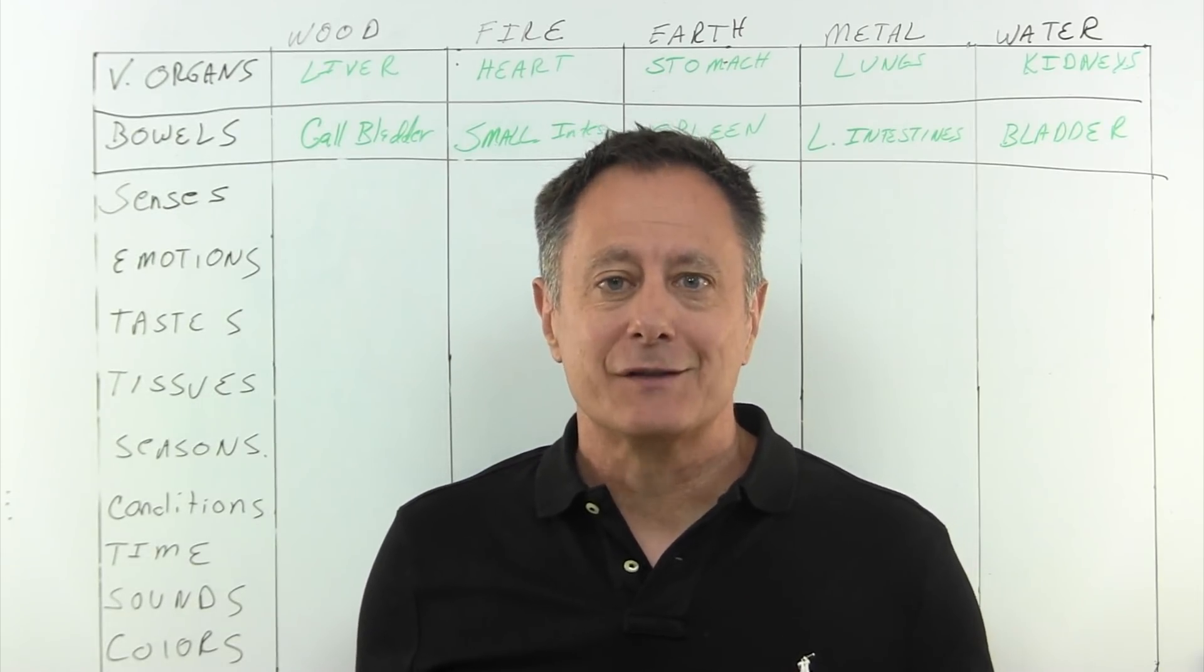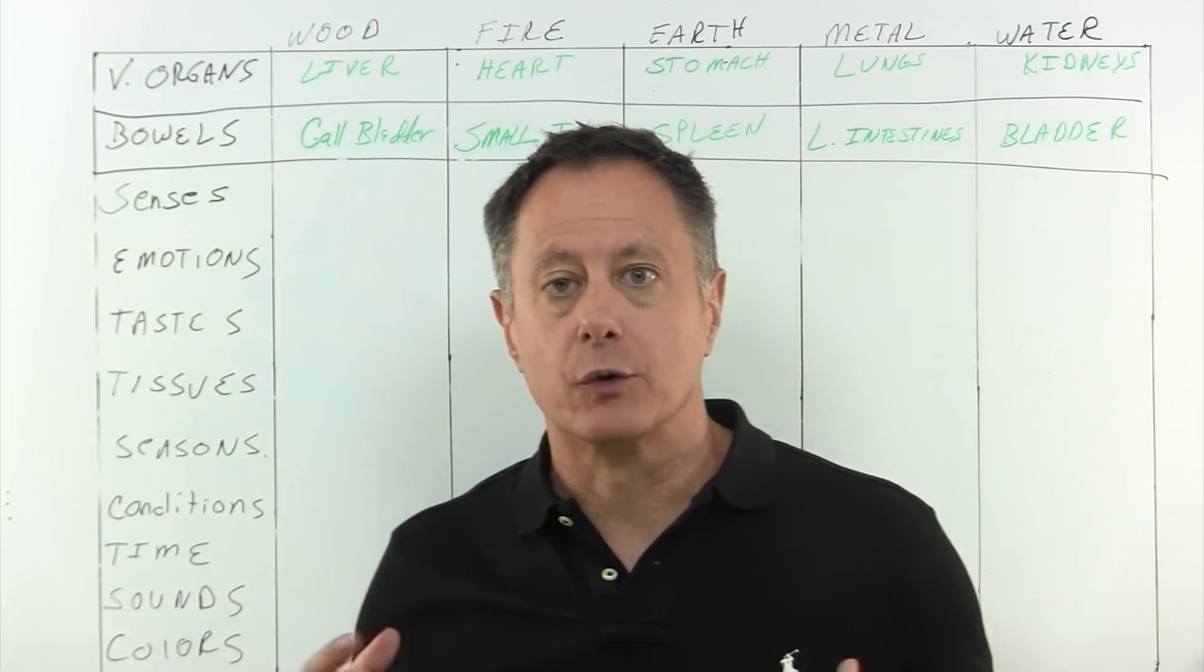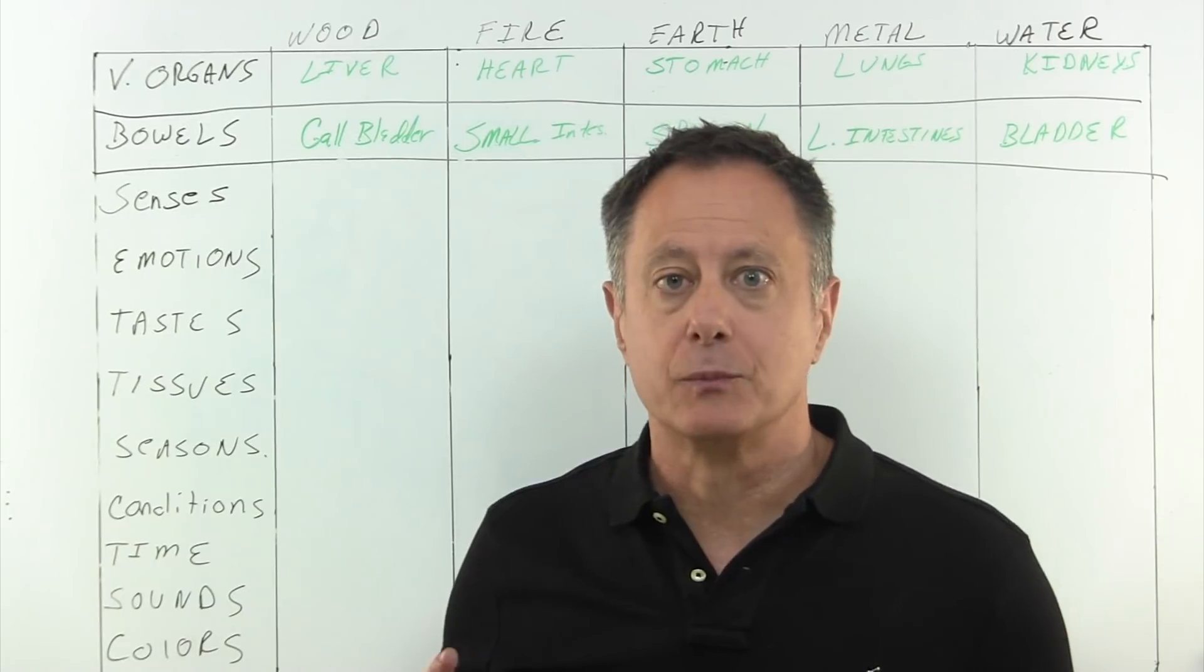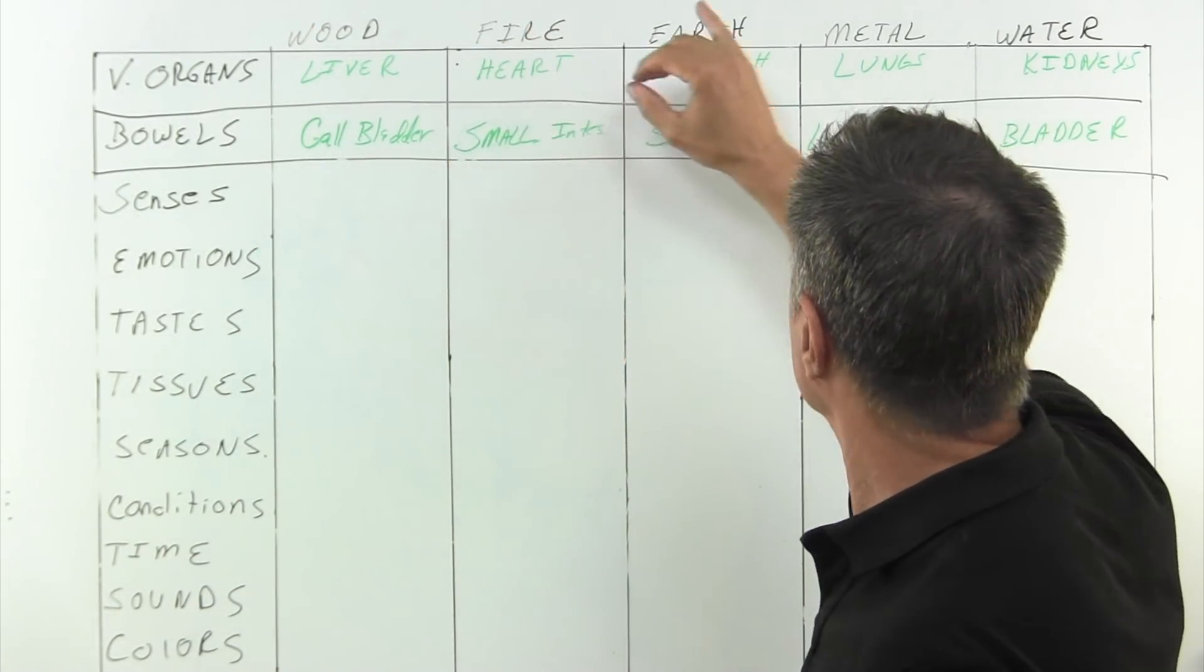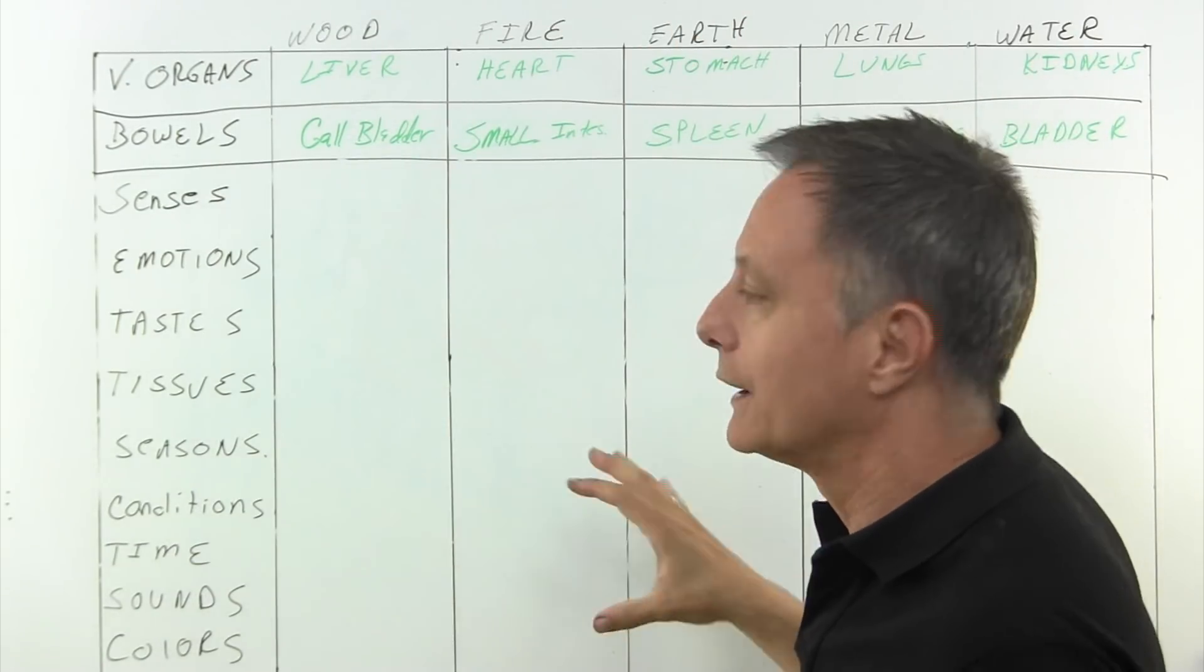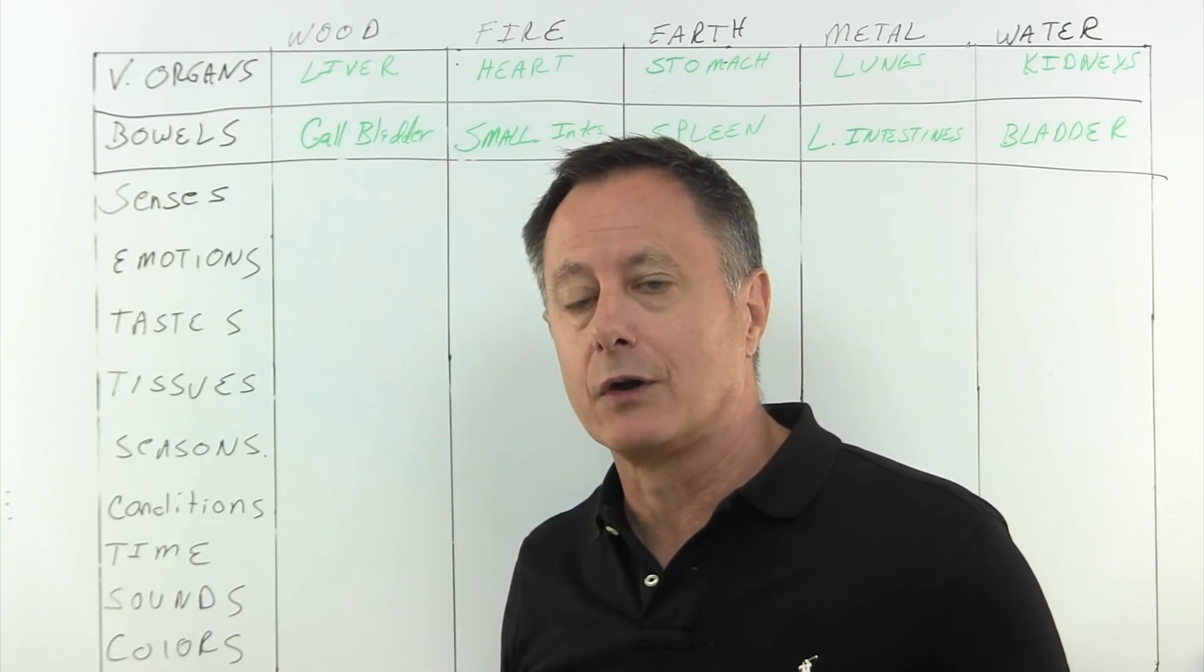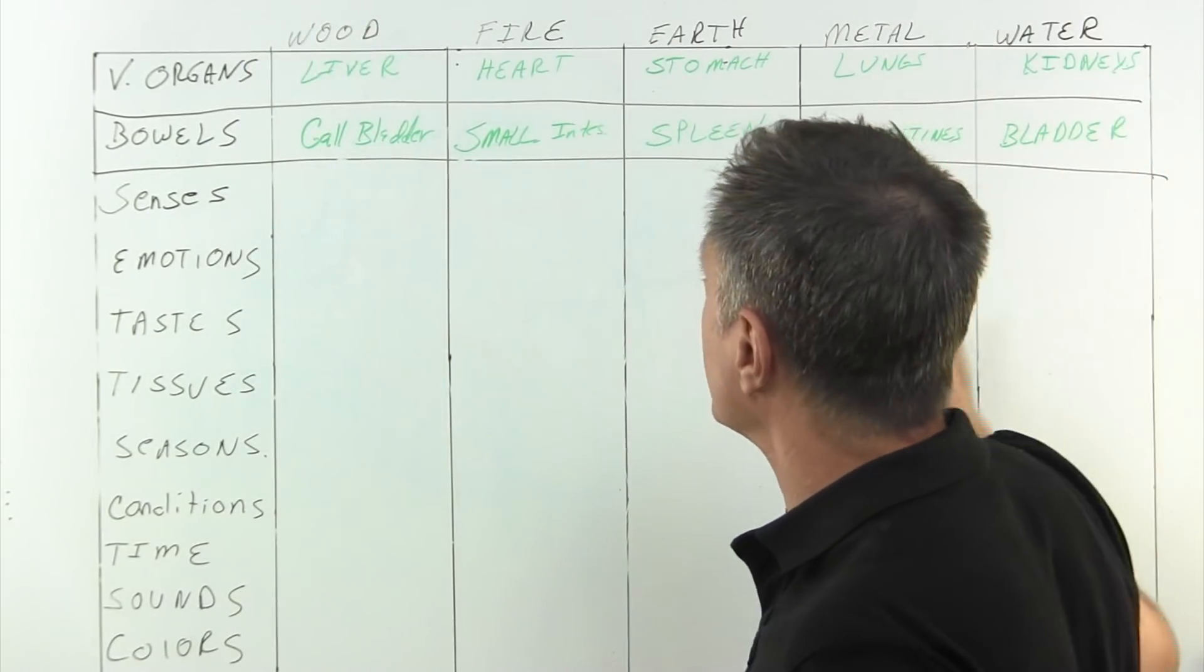Hi. So last time we talked, I showed you how the organs, the major organs of the human body, the visceral organs and the bowel organs, are mapped in traditional Chinese medicine to this system of five elements: wood, fire, earth, metal, and water. And last time I showed it to you graphically in constructive and controlling cycles. What I've done today, because of the larger number of things we need to talk about, is put it into a table for you.